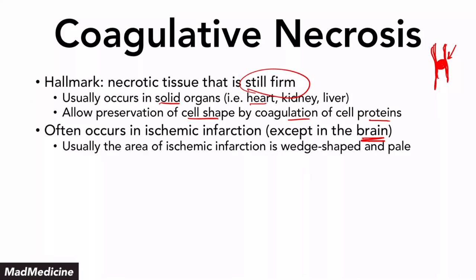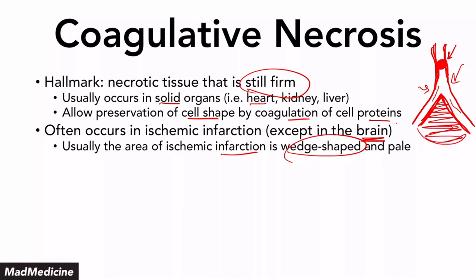Usually the area of infarction is going to have a wedge shape and it's going to be pale. Why wedge shape? These types of infarctions occur at branch points. If you block off an artery before the branching occurs, all of that area is not being perfused — because that part of the vessel is not giving oxygen to the surrounding tissue, you're going to get a wedge-shaped infarct. Later on you're going to see some anastomosis coming in, so the rest of the tissue might be normally perfused, but you do get this classic wedge-shaped necrosis.